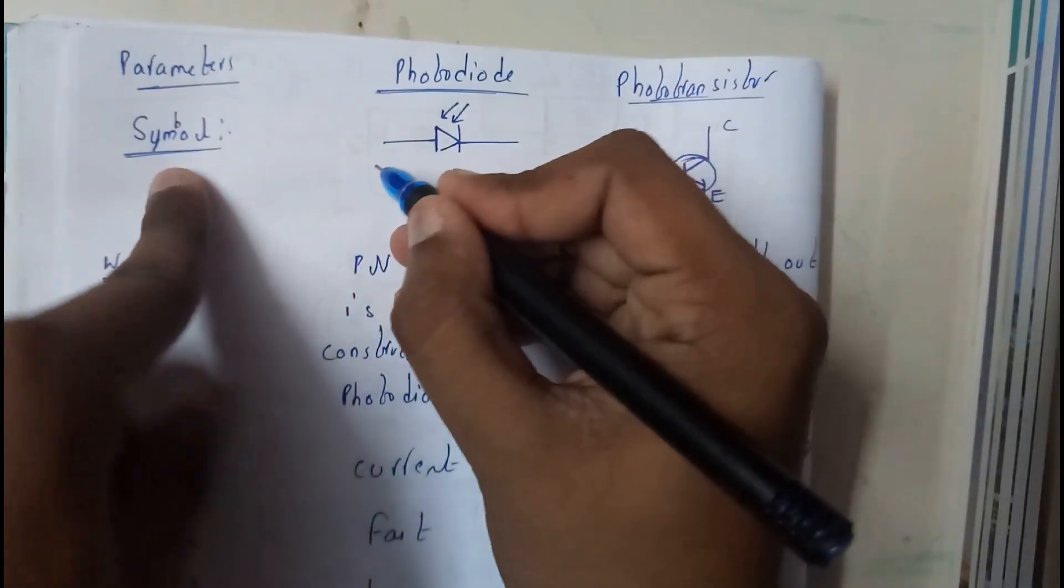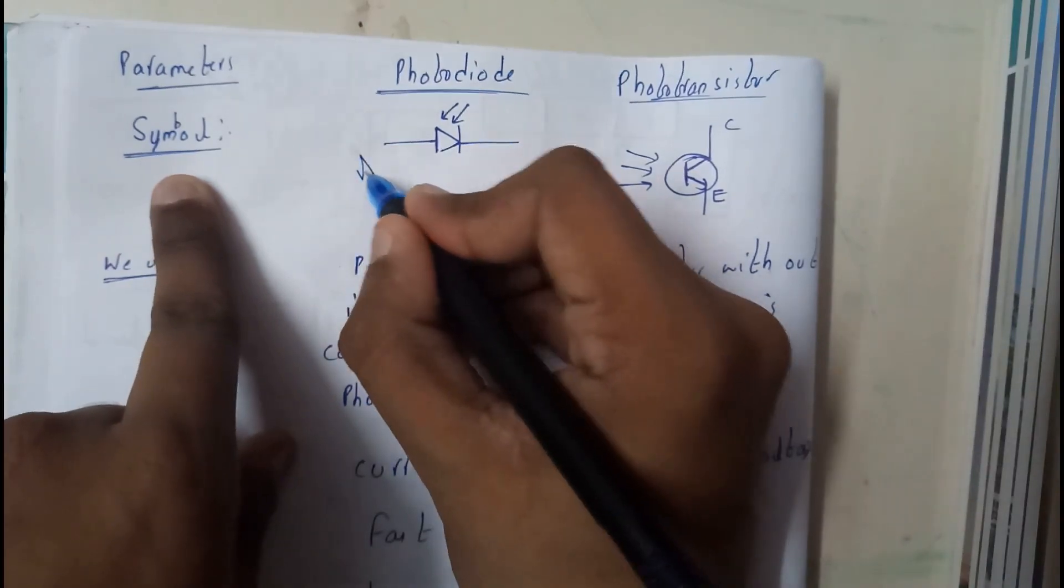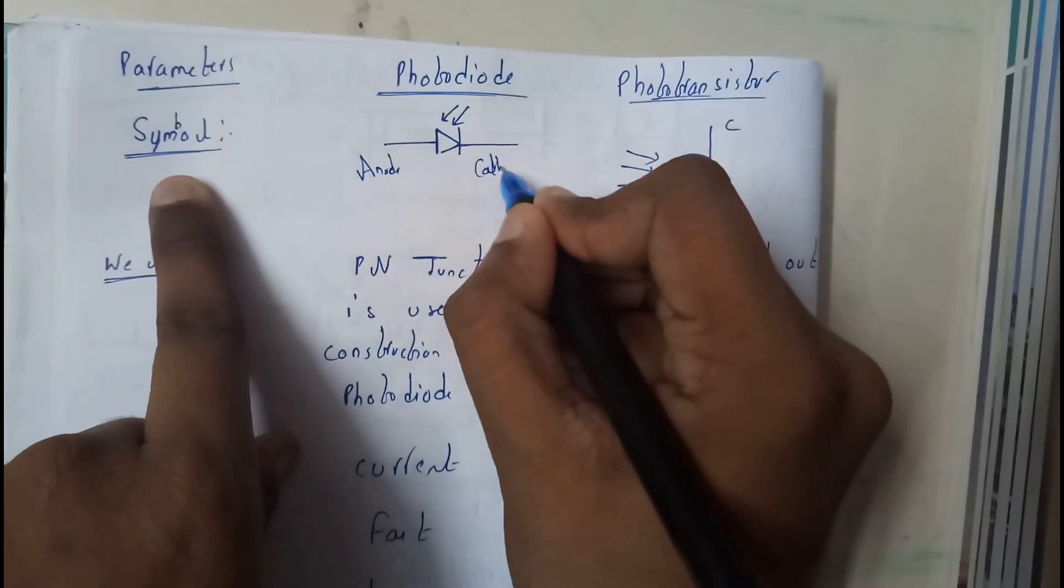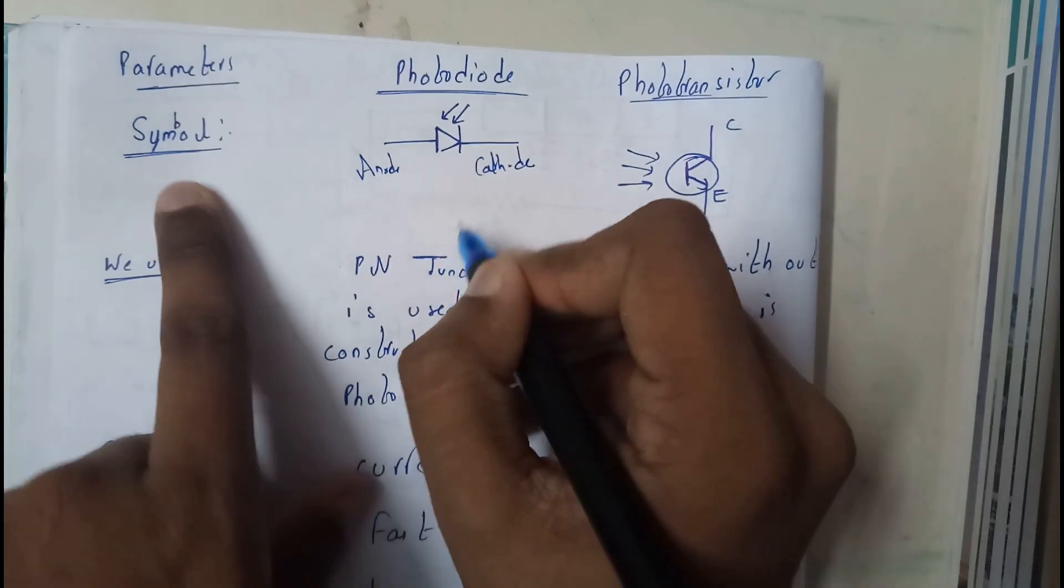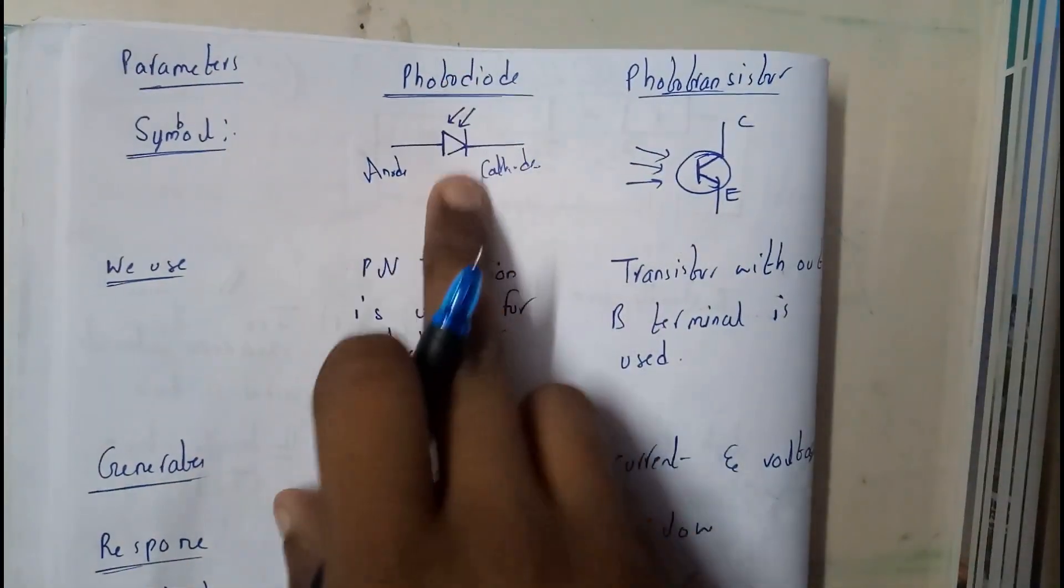I missed this thing - this terminal is called anode and this terminal is called cathode for a photodiode.